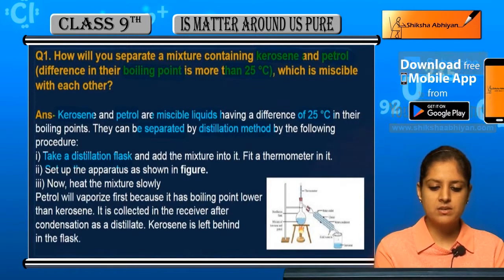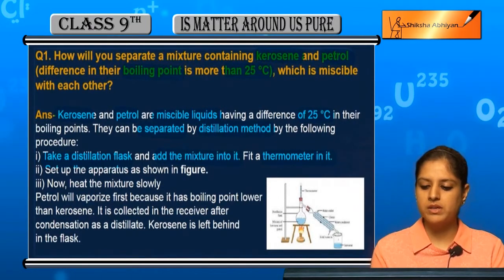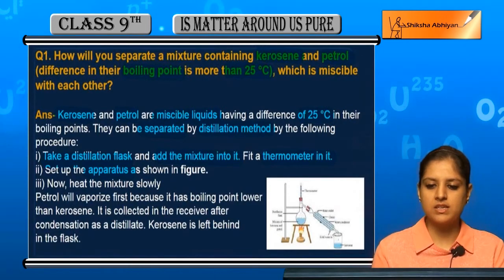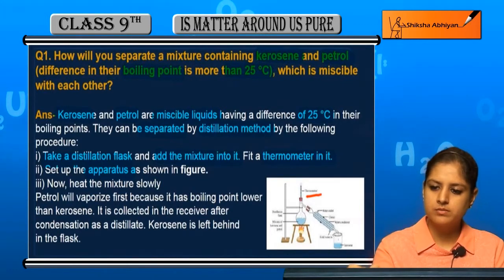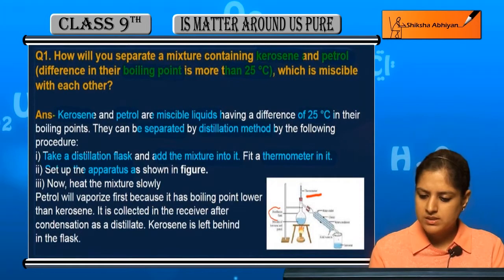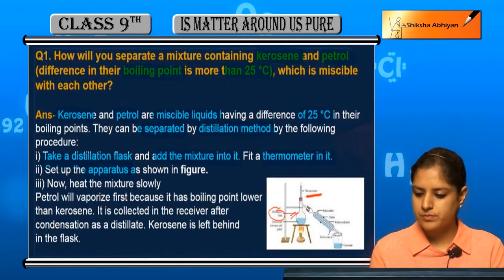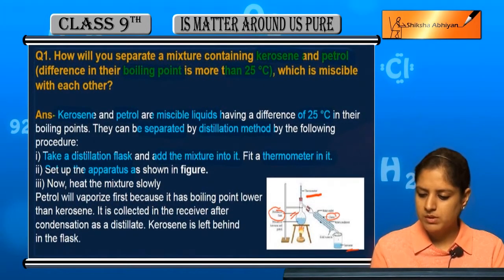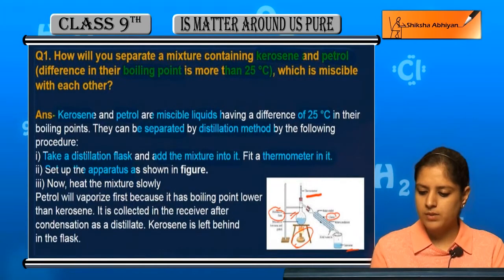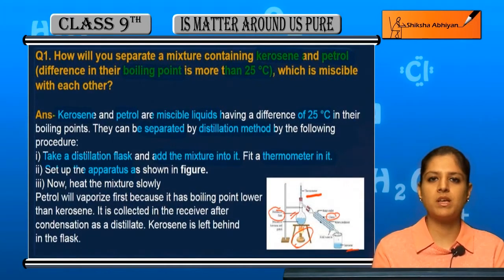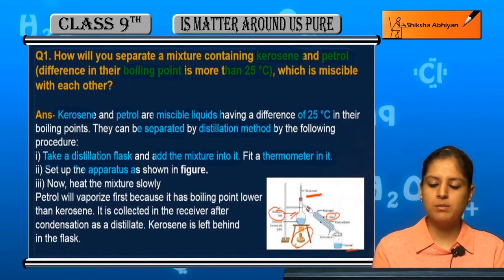To carry out this method, we have a distillation flask and we add the mixture to it, and add a thermometer to the apparatus. We put a burner on this set up. This is the distillation method — we have added the mixture in the flask, fixed the thermometer, and now we are ready to heat.